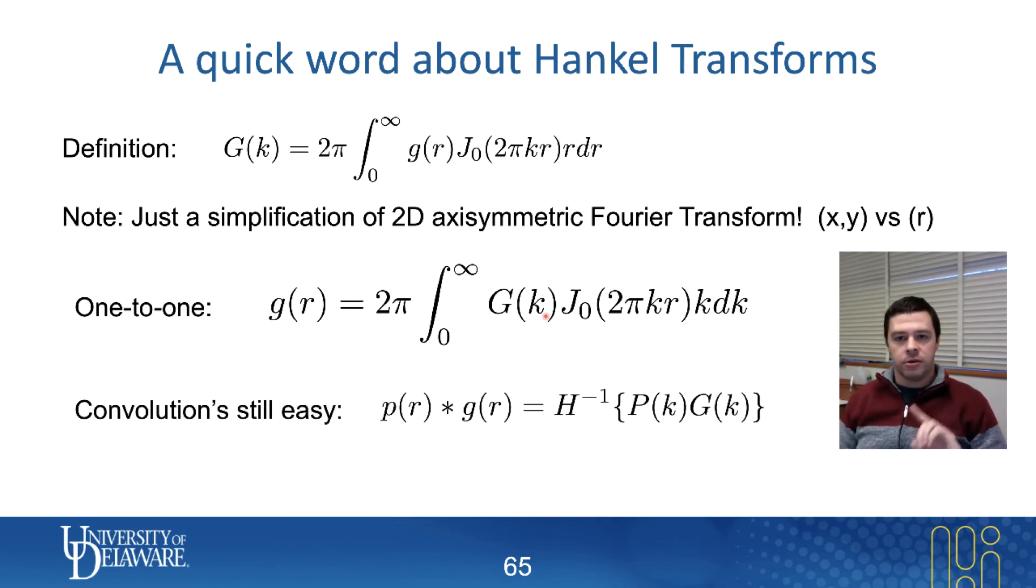The other important thing, and the thing that we're going to use, is that convolution is still easy. So, remember, convolution in real space corresponds to multiplying Fourier transforms in Fourier space. Same is true of Hankel transforms. Convolution of the real space functions corresponds to taking the inverse Hankel transform of the two Hankel transforms that you're trying to convolute.